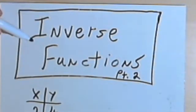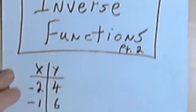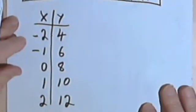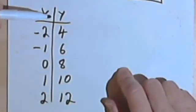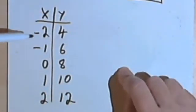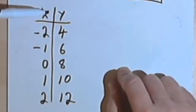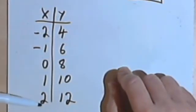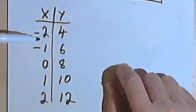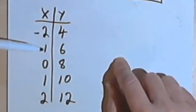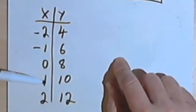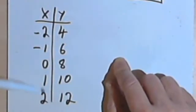This is going to be the second video about inverse functions, and I want to start with a table of values. So here I've got this table, and in my x column, my input column, I've got negative 2, negative 1, 0, 1, and 2.